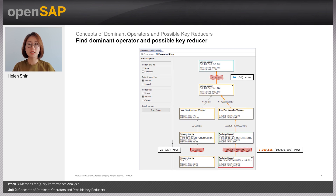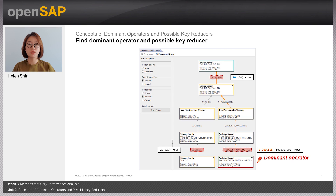Let's check out the result size of each column search. From the last slide, we know that the Analytical Column Search contains the Dominant Operator, because it has the longest exclusive time and the highlighted orange line indicates it. So we now know the Dominant Operator and we can find the Possible Key Reducer. We define the Possible Key Reducers as an ancestor operator of the Dominant Operator that could reduce the result from it. Since the records from the Dominant Operator are reduced from the most top column search, the Possible Key Reducer could be that column search.